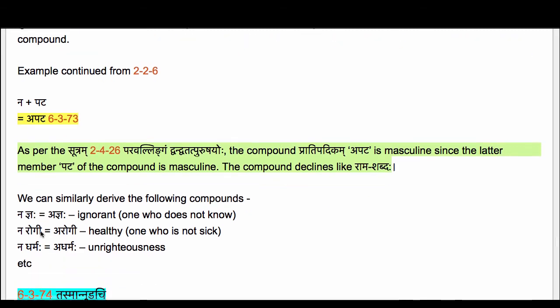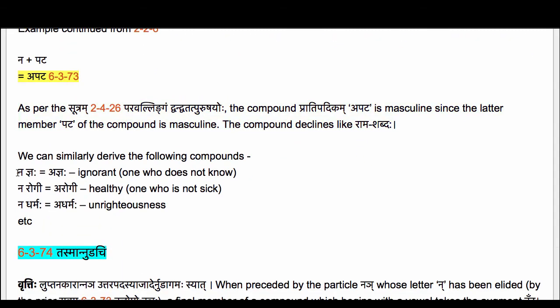You can similarly derive the following compounds: Na Nyaha equals A Nyaha — the opposite of one who is knowledgeable, hence it means one who is ignorant, one who does not know. Na Rogi equals A Rogi — the opposite of one who is sick, meaning one who is healthy, one who is not sick. Na Dharmaha equals A Dharmaha — unrighteousness, the opposite of righteousness.